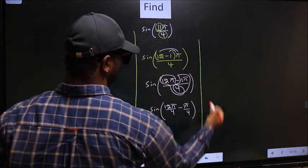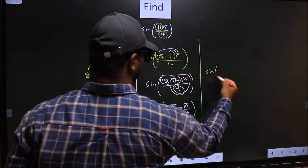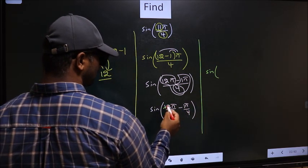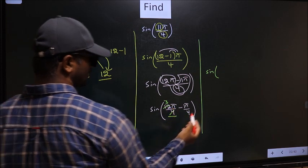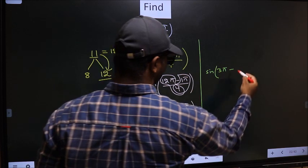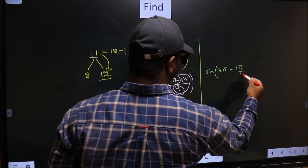Next. Sine. Now here you should cancel. 4 ones, 4 threes. So, we get 3π minus this no change, 1π by 4.